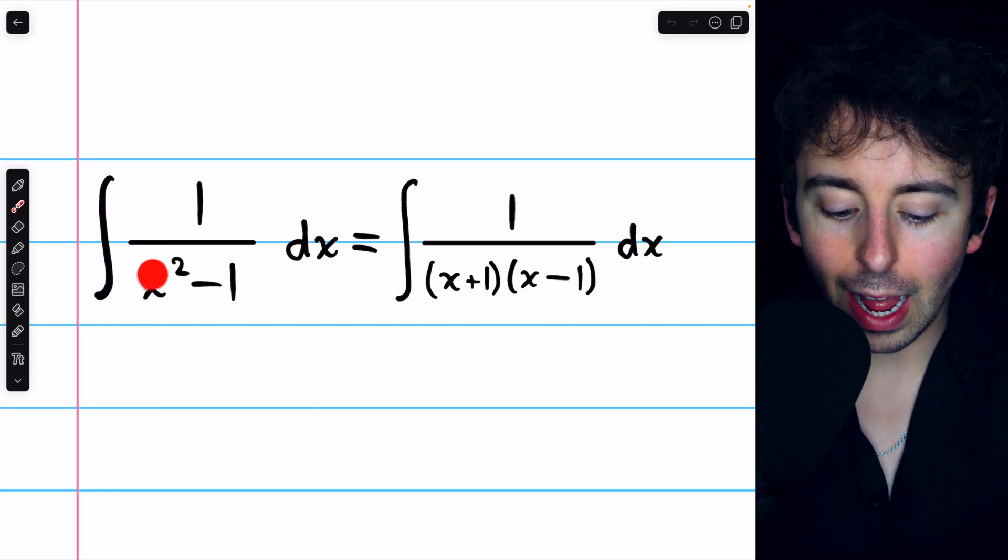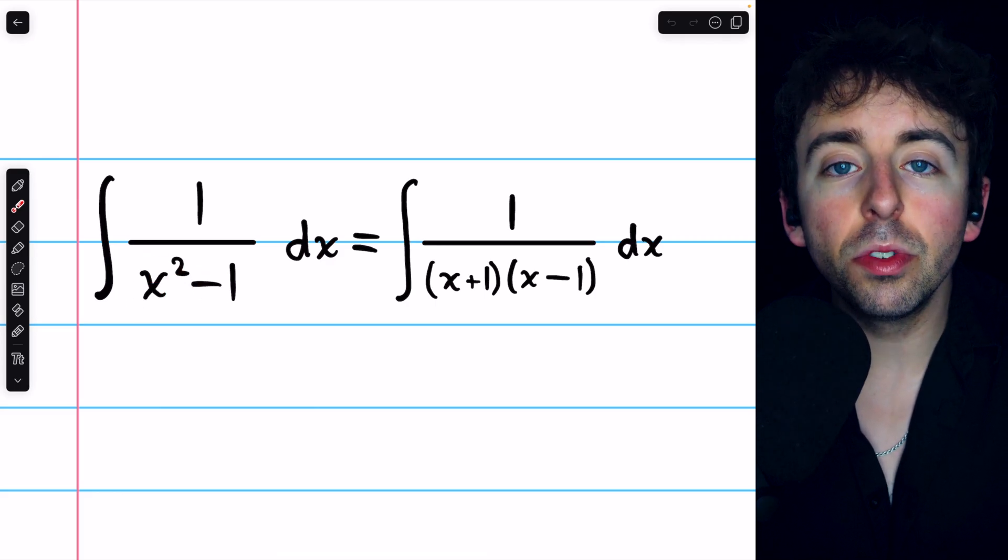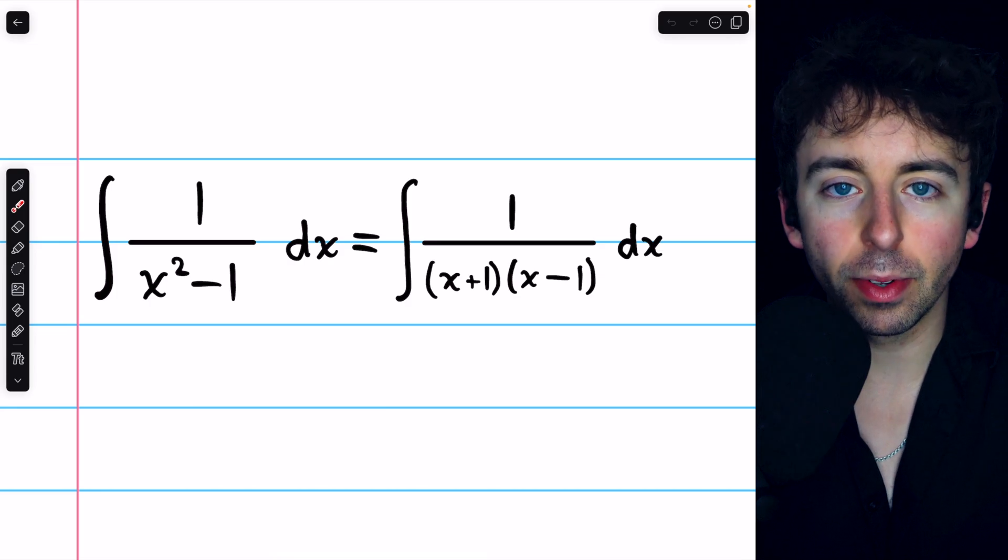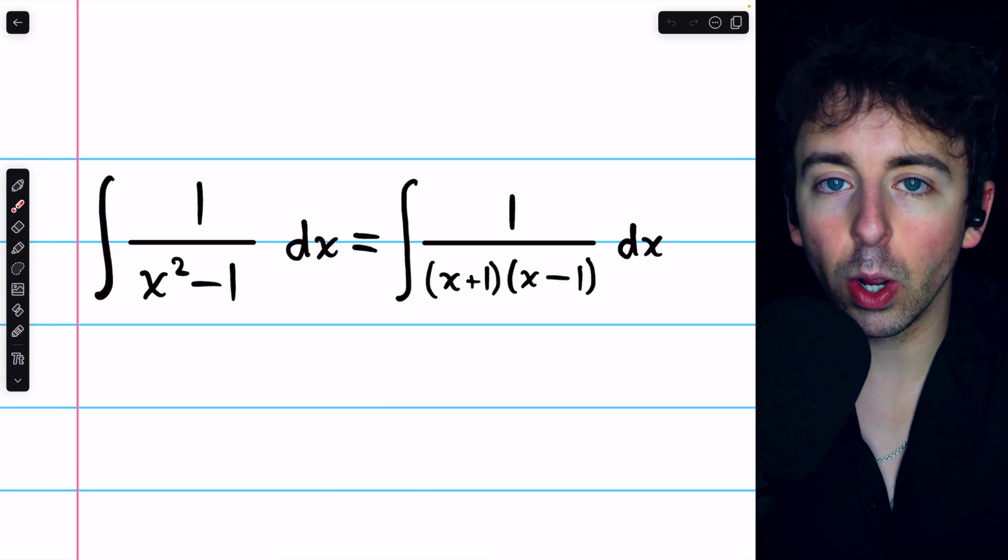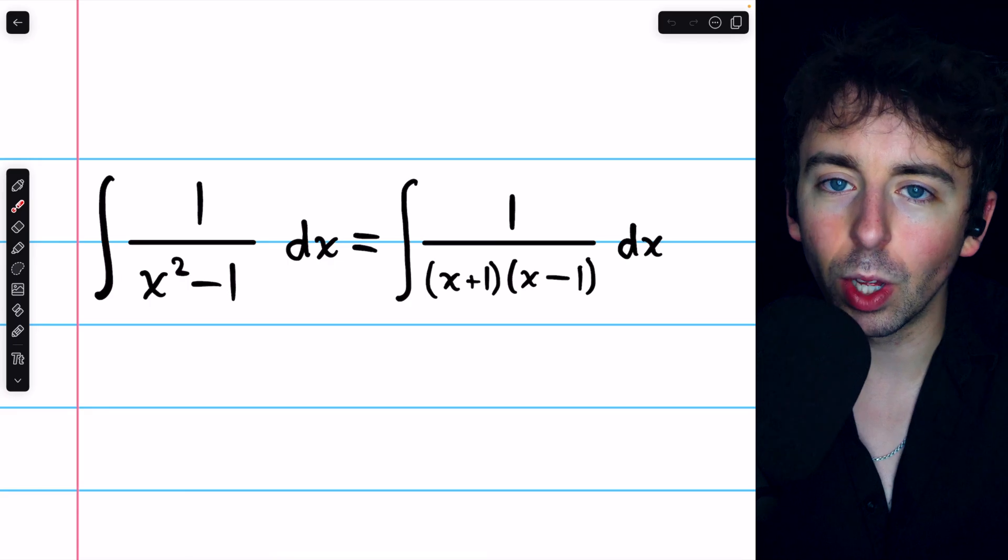We can integrate 1 over x squared minus 1 using partial fraction decomposition. I'll leave a link in the description to my lesson going over that method, but in this video, we'll practice.